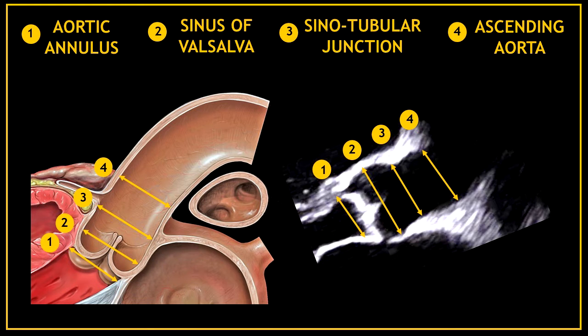Now let's have a proper look at all the segments you are able to visualize in the parasternal long axis view. In this view you are able to find and measure the aortic annulus, the sinus of Valsalva, the sinotubular junction, and the proximal ascending aorta.